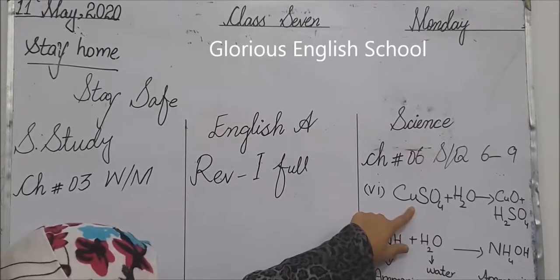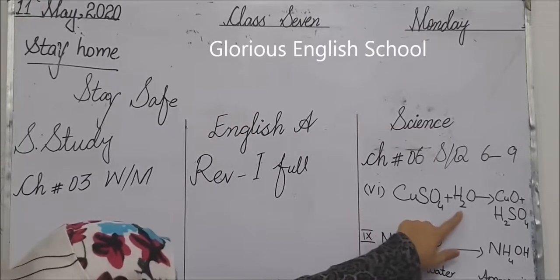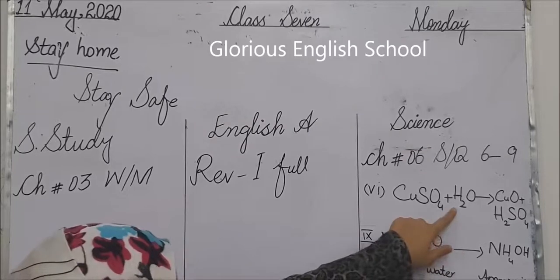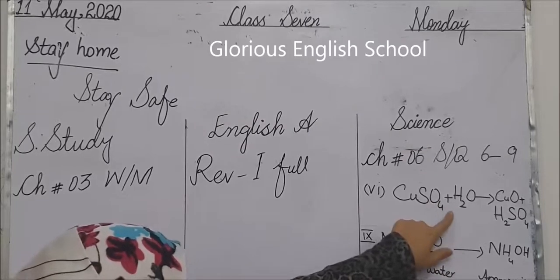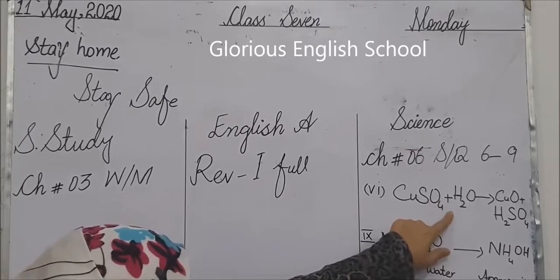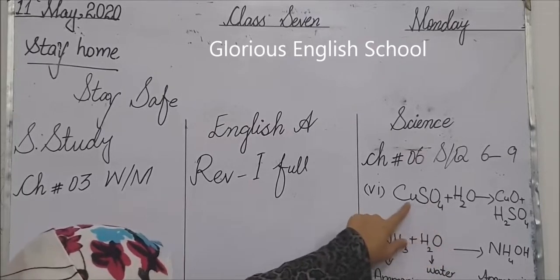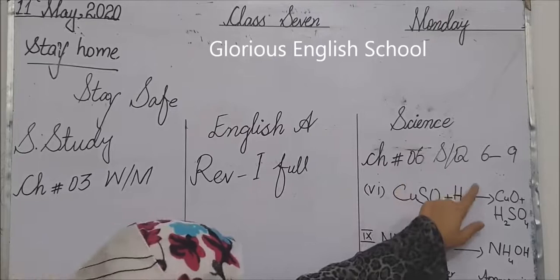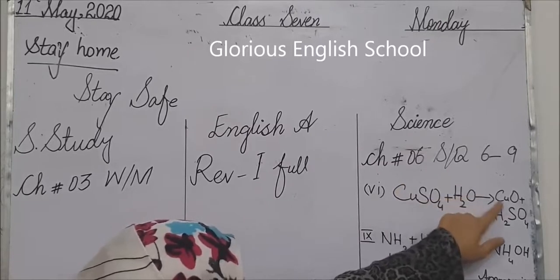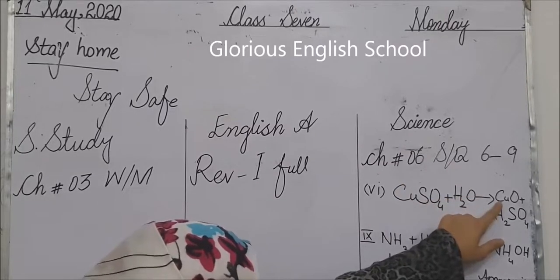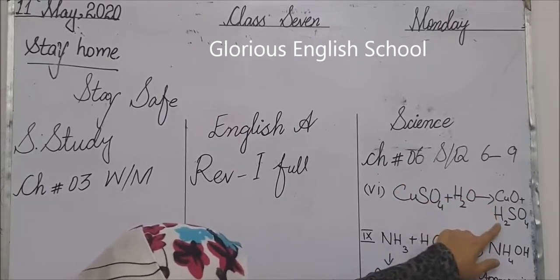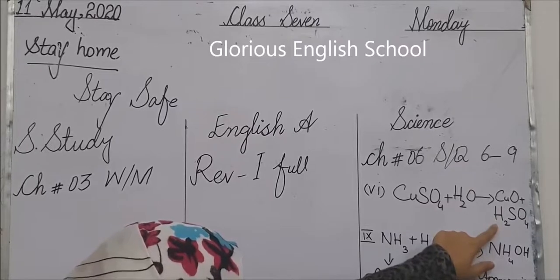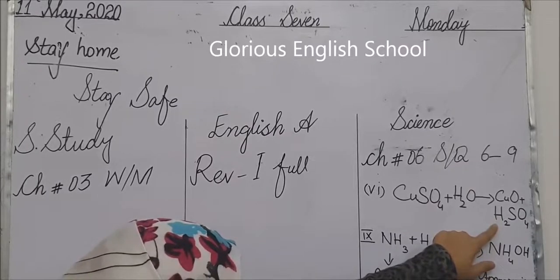Copper sulfate formula is CuSO4. When copper sulfate reacts with water (H2O), copper oxide (CuO) is formed and H2SO4 is separated from the surface.